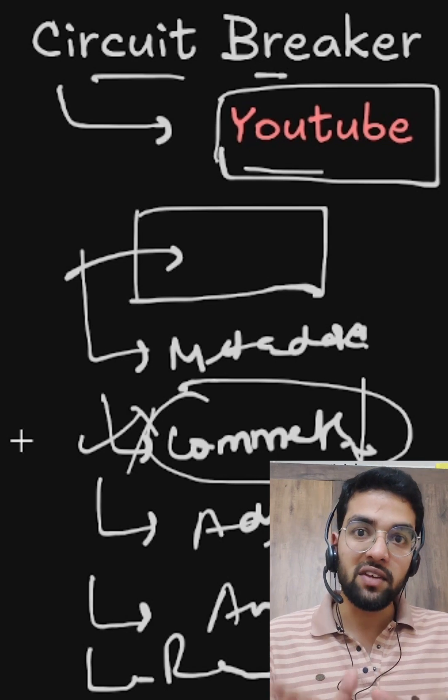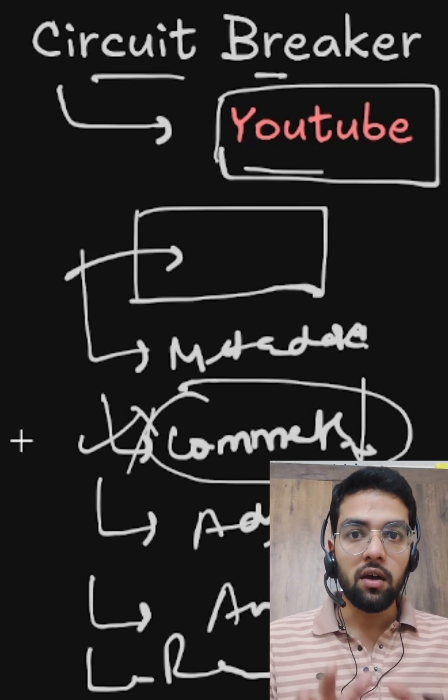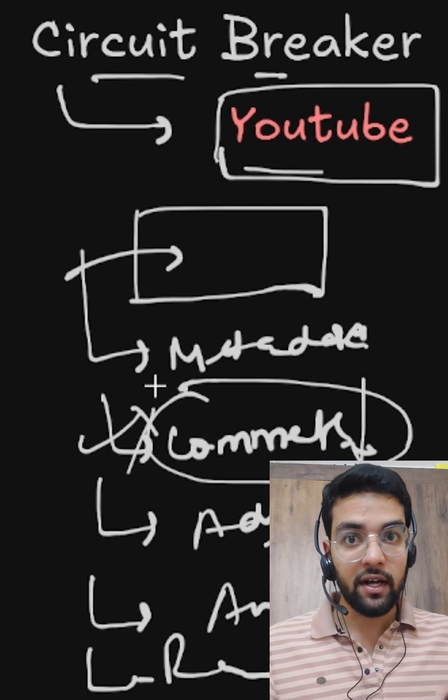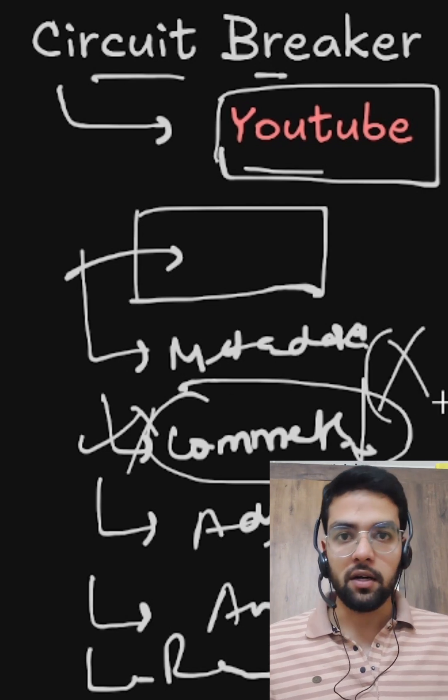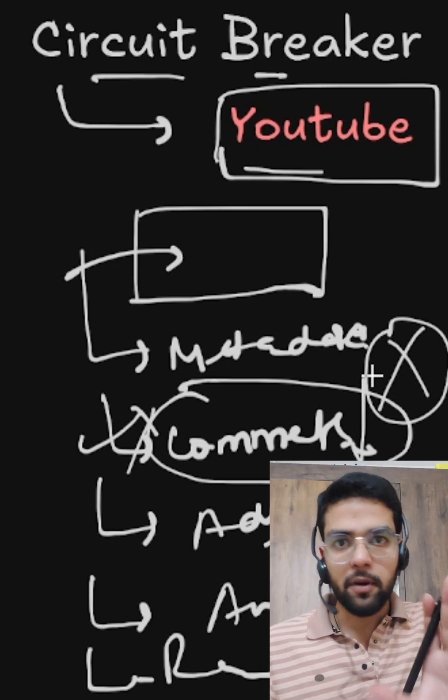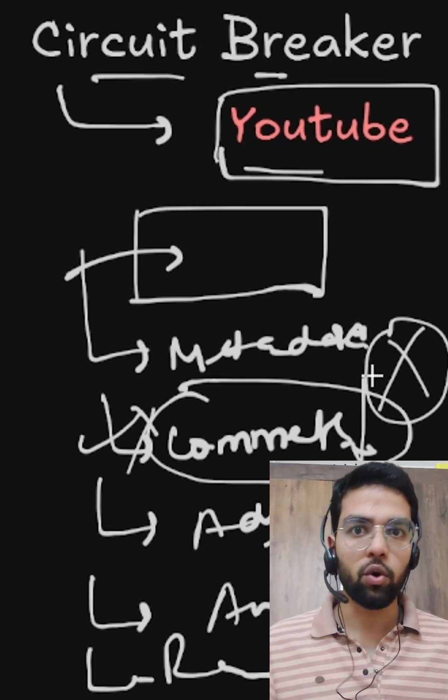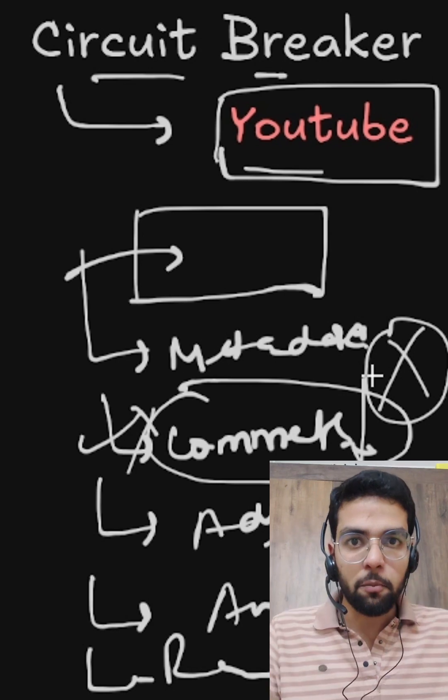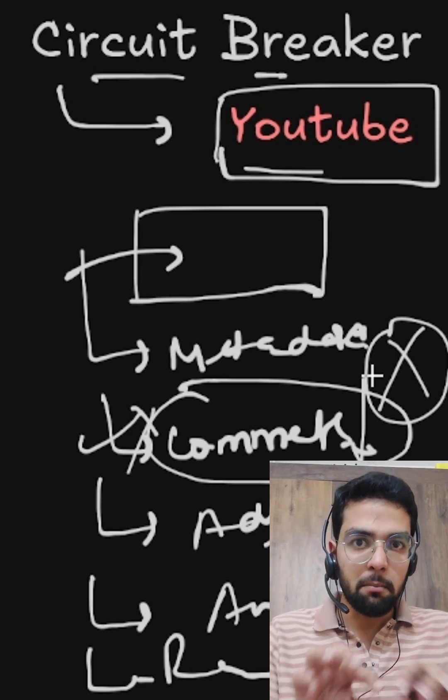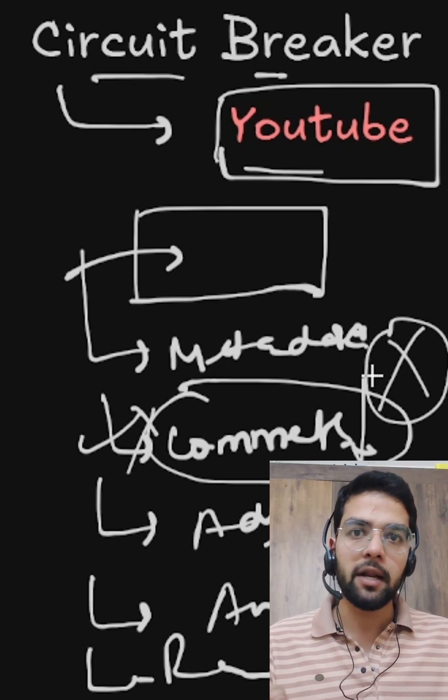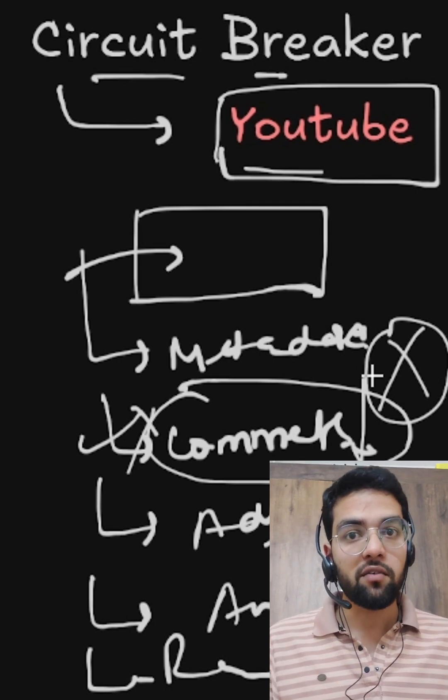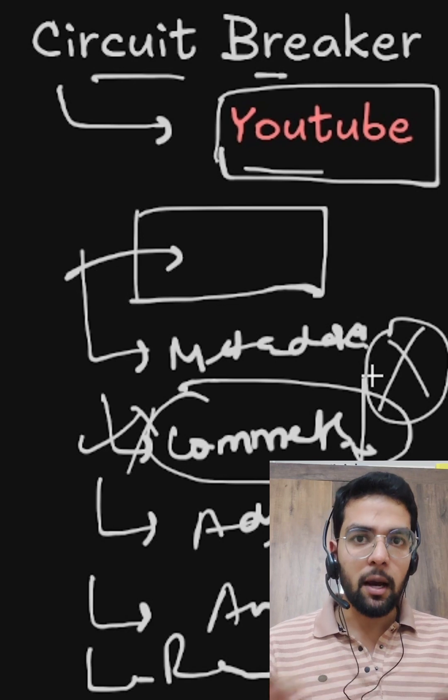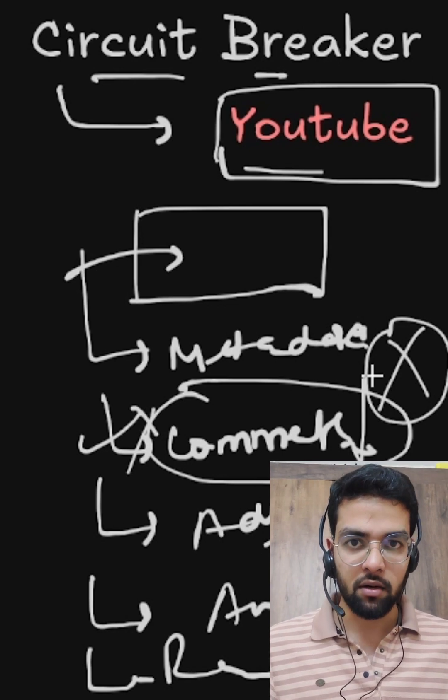With Circuit Breaker, when comment service goes down, it will detect and it will stop trying to load comment. It will load the video perfectly and with a message 'Comments are temporarily unavailable.' So if you have seen that video is working perfectly fine, it's running, but comments are temporarily unavailable, not loaded.